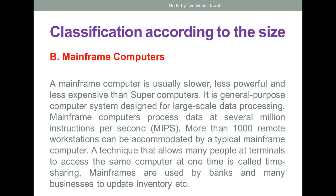The second category is the mainframe computer. A mainframe computer is usually slower, less powerful, and less expensive only in comparison to a supercomputer. It is a general purpose computer system designed for large scale data processing. Banking is perhaps the best example of mainframe computer use, as banks process large numbers of customer transactions daily. Mainframe computers process data at several million instructions per second.